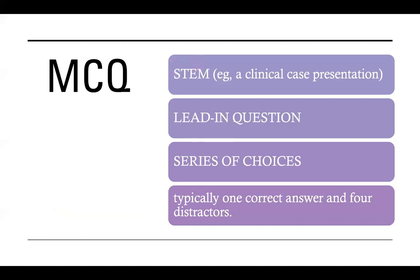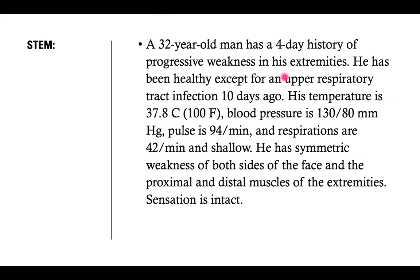Now, multiple-choice questions has a stem, which usually in specialty exams is a clinical case presentation. That is why you have to go back to your clinical exposure as a trainee. Cases you saw in the ER, cases you saw in the operating room, cases you saw in the outpatient, cases you encountered during conferences. So there's the stem, there's the lead-in question, there's the series of choices, and typically, there's one correct answer, and four distractors. So this is a stem, 32-year-old, four-day history, progressive weakness of the extremities. Had upper respiratory tract infection 10 days ago. Had a febrile episode. Is tachypneic with RR of 42 per minute. He has shallow respiration. He has symmetric weakness of both sides of the face. Weakness also of the proximal and distal muscles. Sensation is intact.